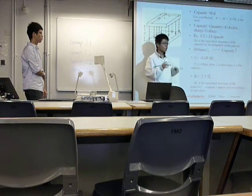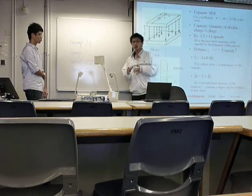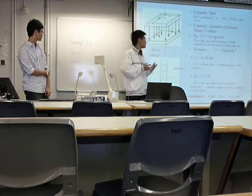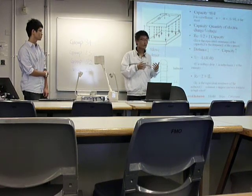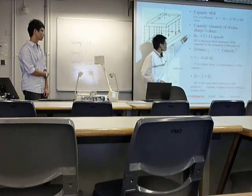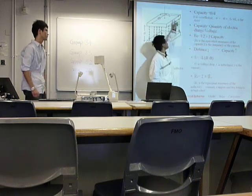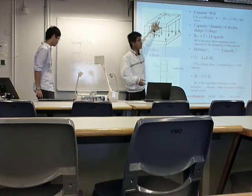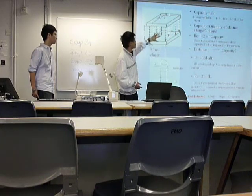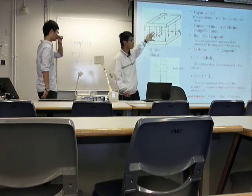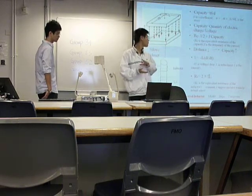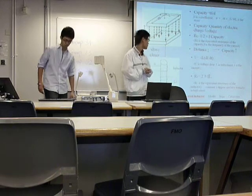When the capacitor is linked into a circuit, its resistance is related to frequency. We can see that S is the area of the metal pieces and D is the distance. So if the distance reduces, the capacitance will become larger.